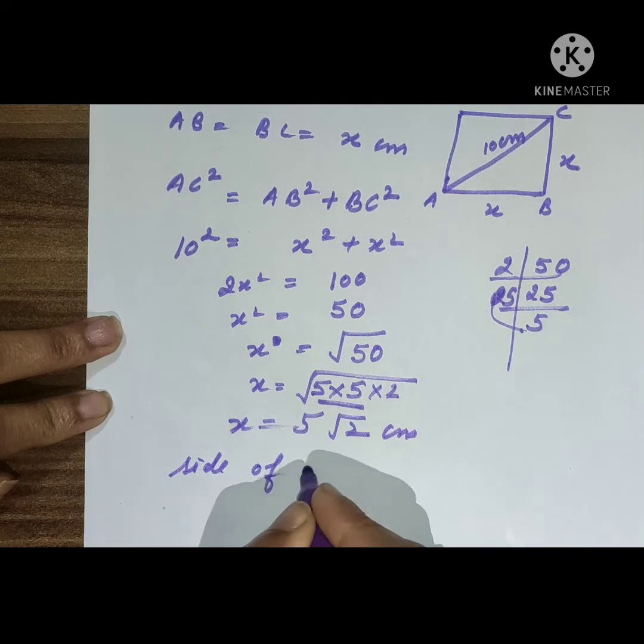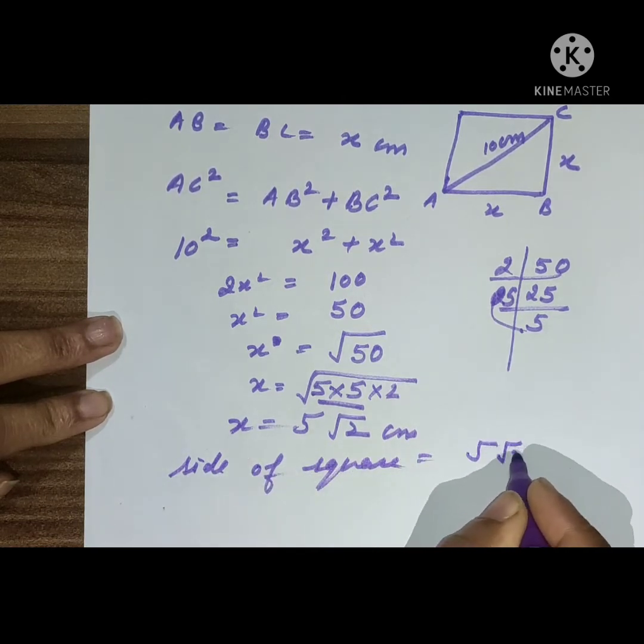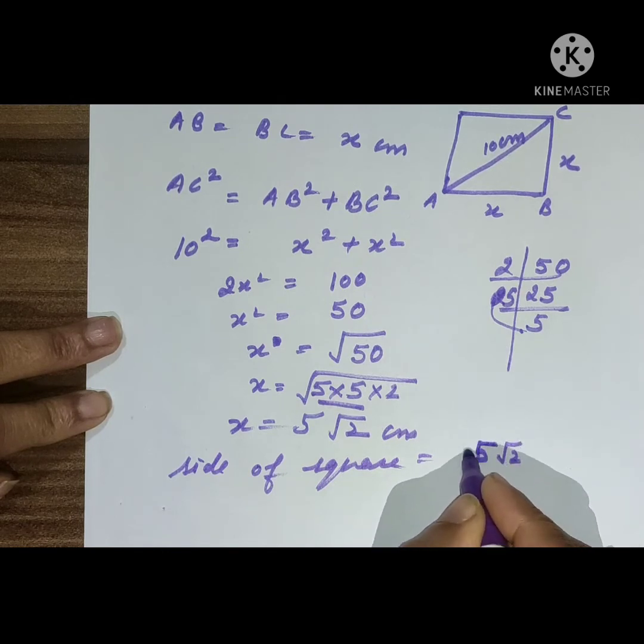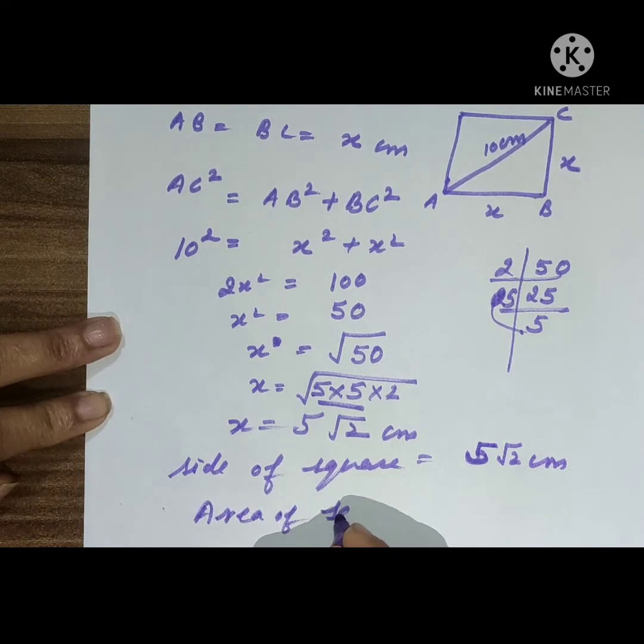X equals 5 root 2, which means the side of the square is 5 root 2 centimeters. So we will find the area. Area of square...